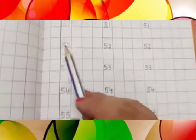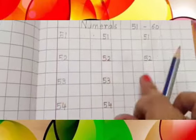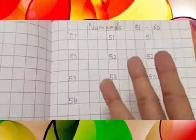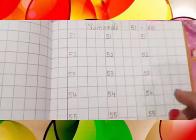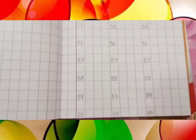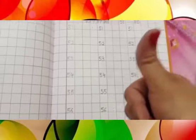So like this, you have to write numerals 51 to 60 three times. Understood, kids? So do practice like this — numerals 51 to 60. Okay kids, I hope you have understood the new topic of numerals. Do practice at home regularly so that you don't forget. Till then, stay home and be safe. Bye.